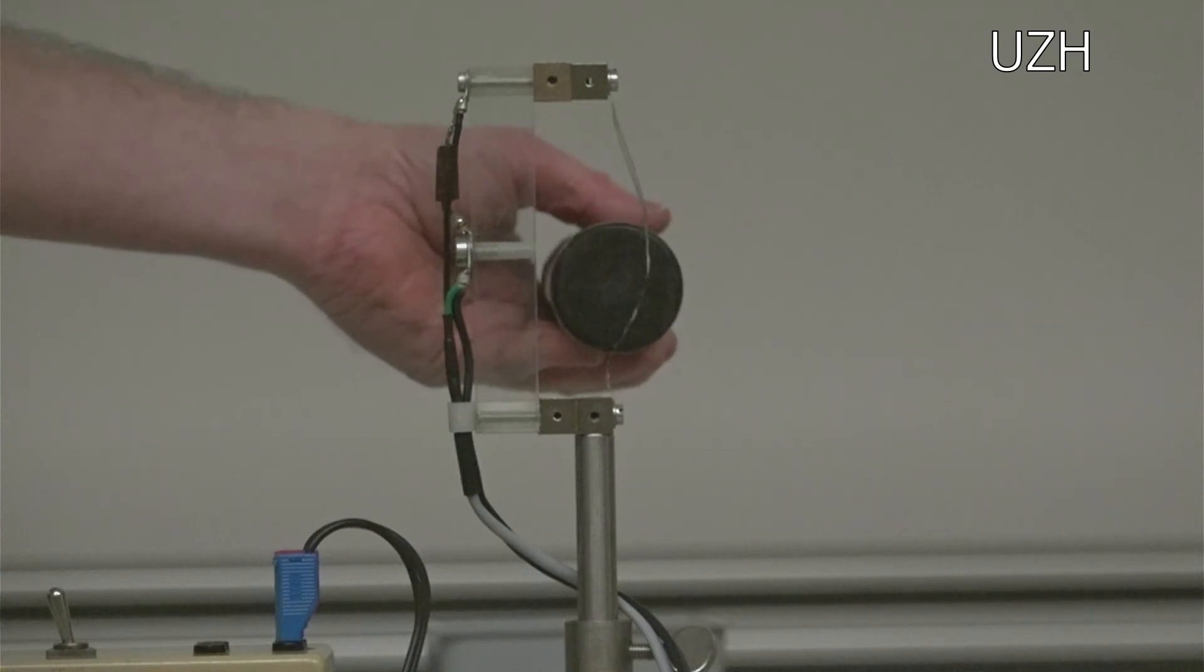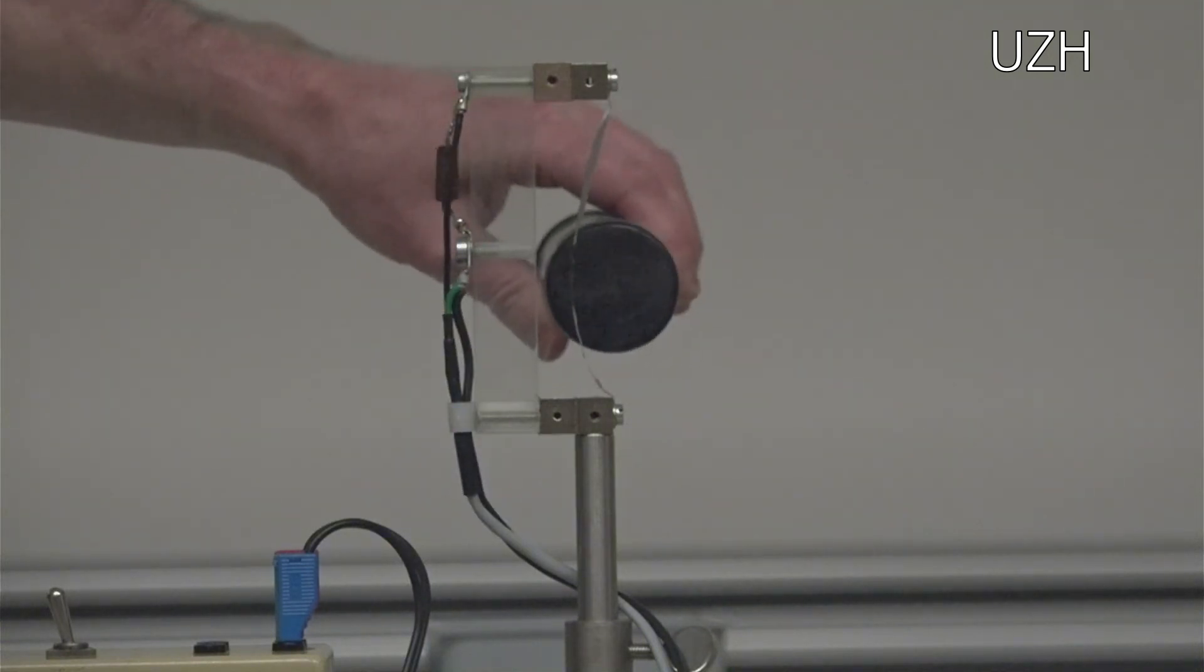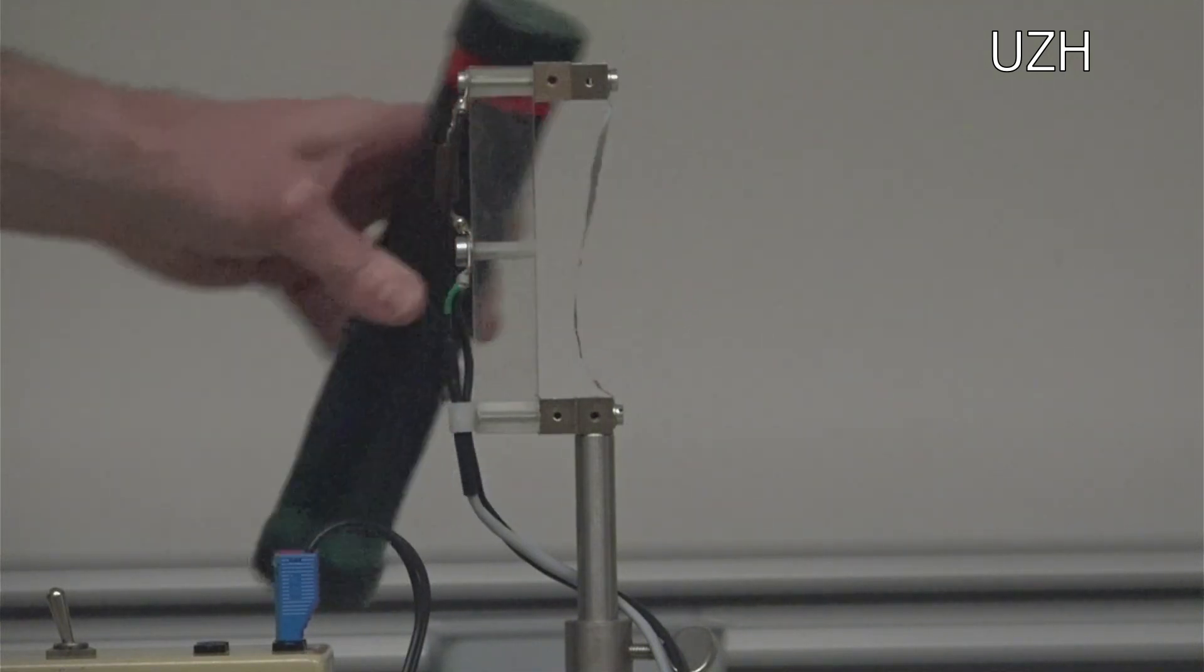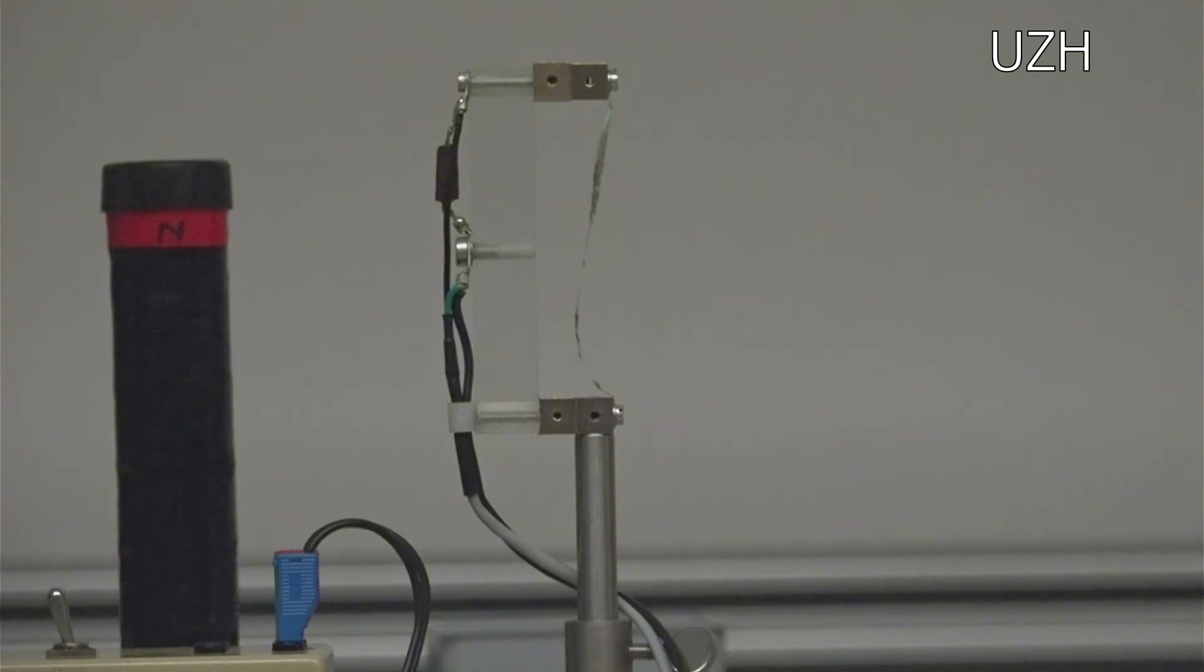Now I can reverse the magnetic field, and we should see the force on this aluminum bend the opposite direction. And indeed we do. And so physics works, and it's not magic, it's physics.